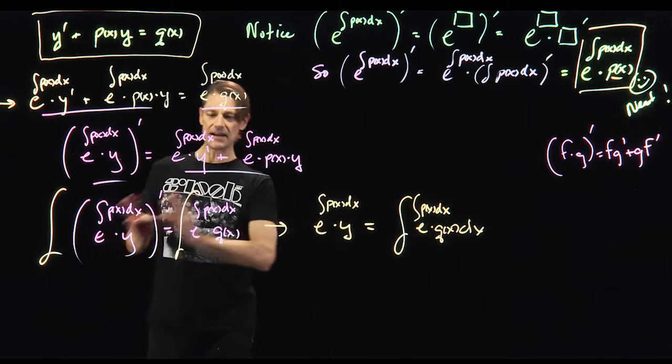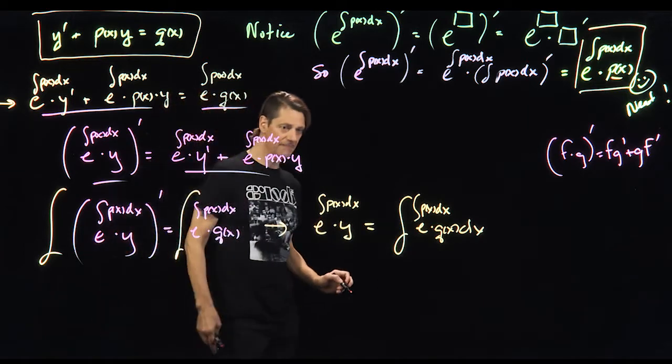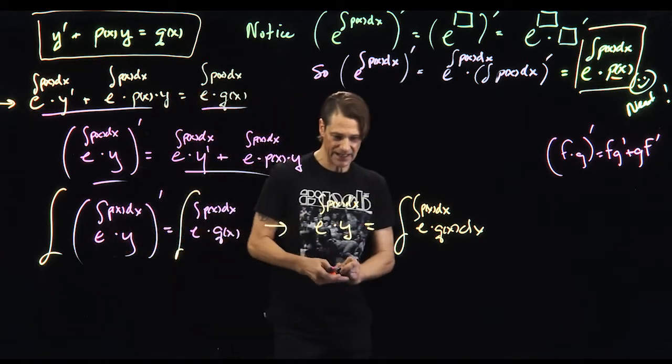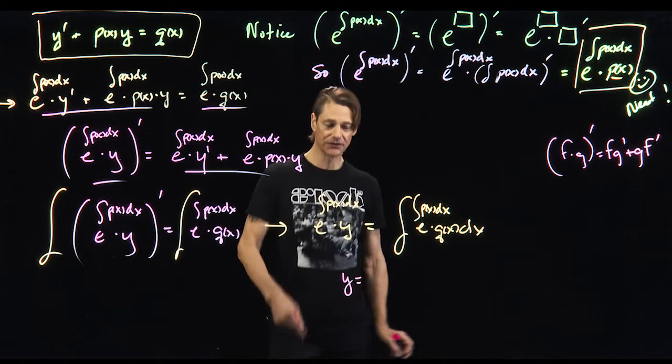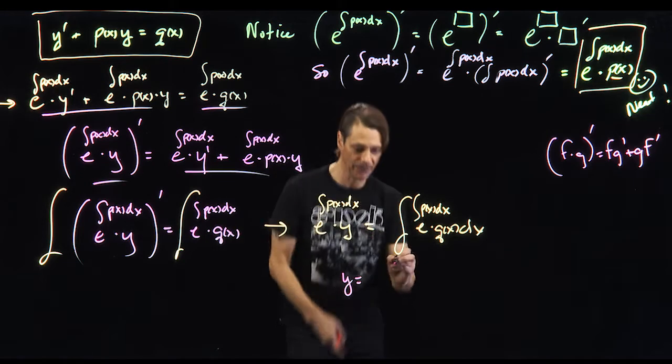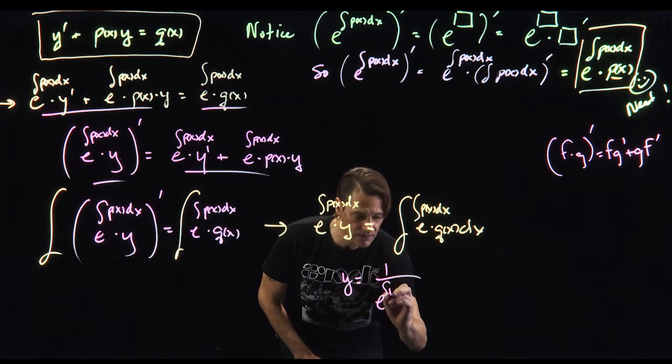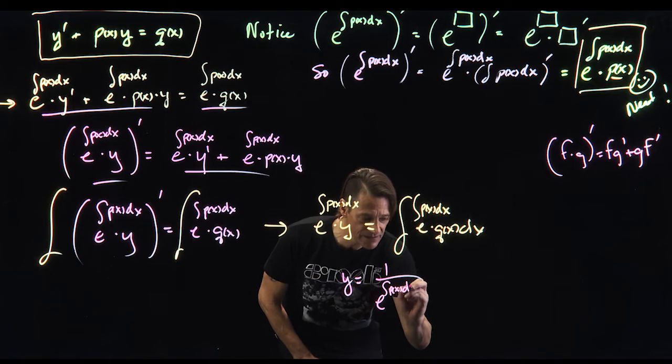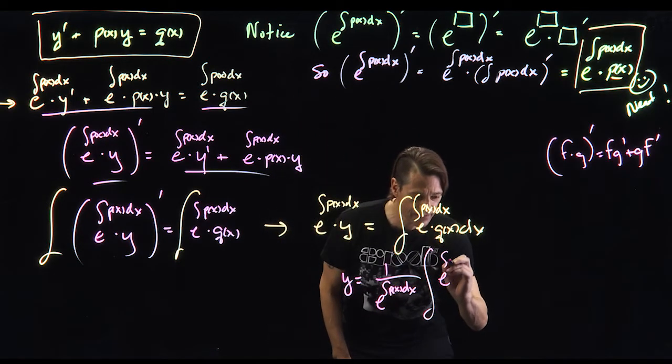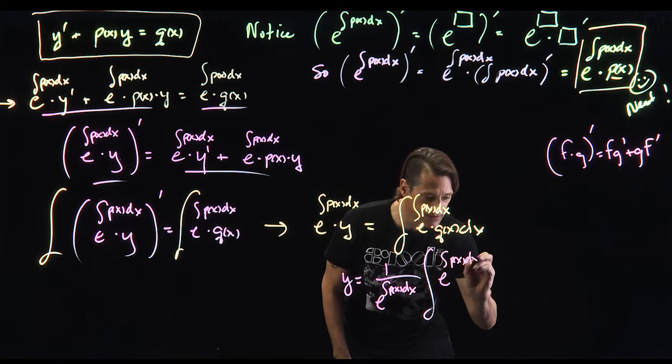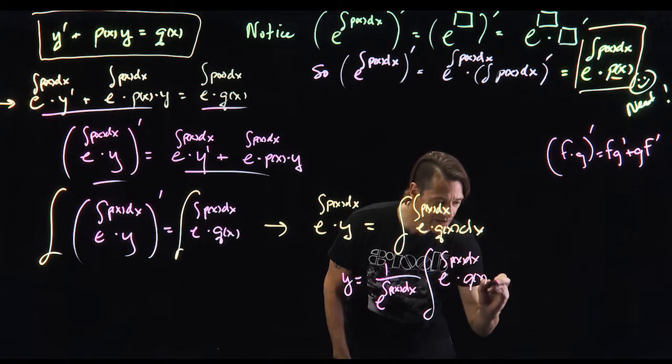So the antiderivative of this side equals the antiderivative of this side. And ultimately this means that we can figure out what y is. y is equal to, I'll just divide both sides by this, 1 over e to the antiderivative of p of x dx times the antiderivative of e to the antiderivative of p of x dx times q of x dx.